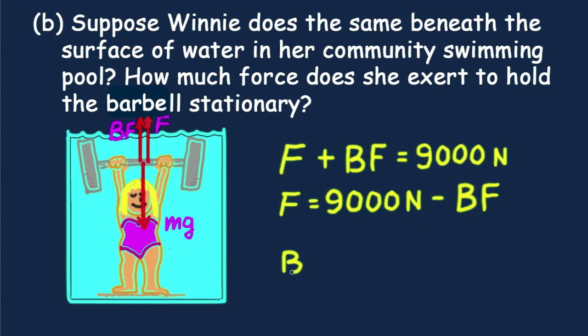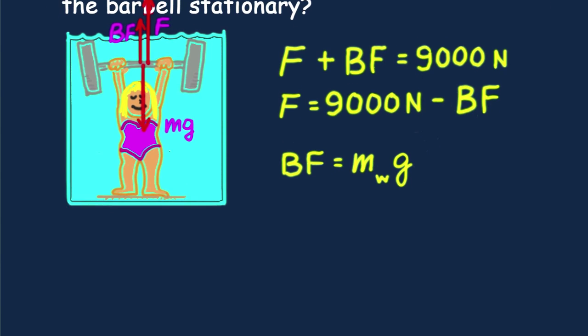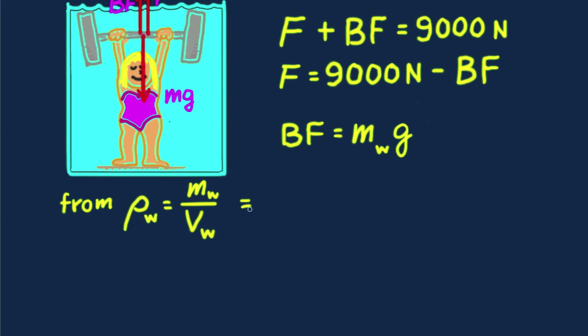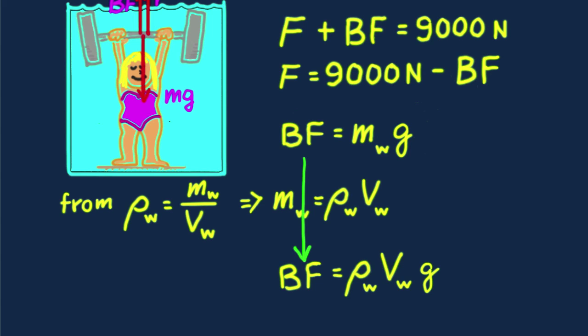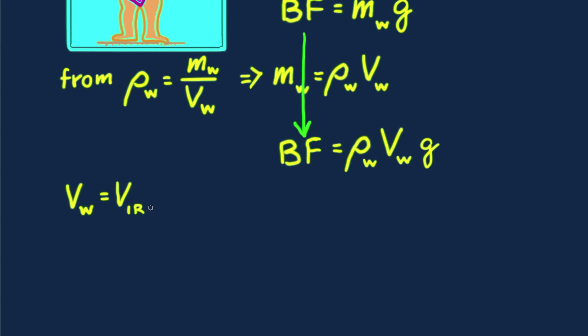BF, buoyant force, is equal to the weight of water displaced by the barbell, which equals Mg, mass of the water, times g. From density equals mass per volume, BF then equals density times volume for water, times g. Note that the volume of water displaced equals the volume of the iron barbell. Let's get that volume from the density of iron.